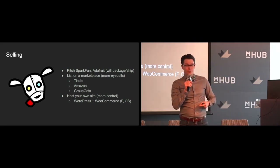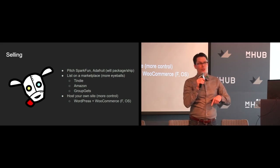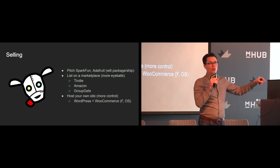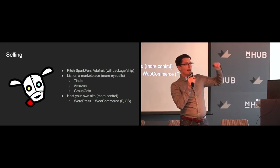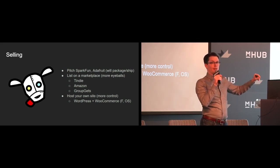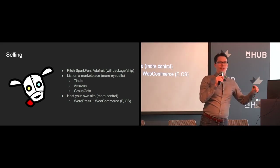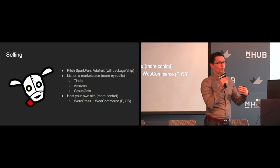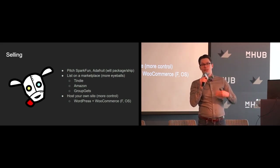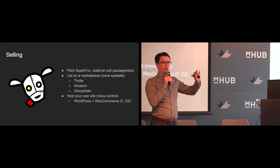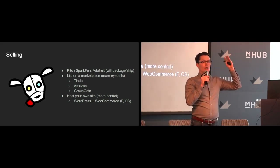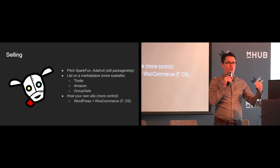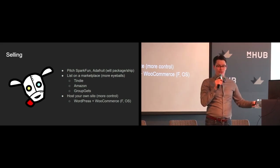Other marketplaces like Tindie and Amazon are good for listing your device. Keep in mind that for many of these you have to warehouse it yourself. Amazon will warehouse your product, but if you're not moving a certain amount of inventory out of their warehouse every week or month, they will charge you. You may want to warehouse it yourself and ship as people buy, especially if you're just getting started. There are also sites like GroupGets, which works kind of like Kickstarter — you can list your device, get people to commit and back it, without running a full Kickstarter campaign.